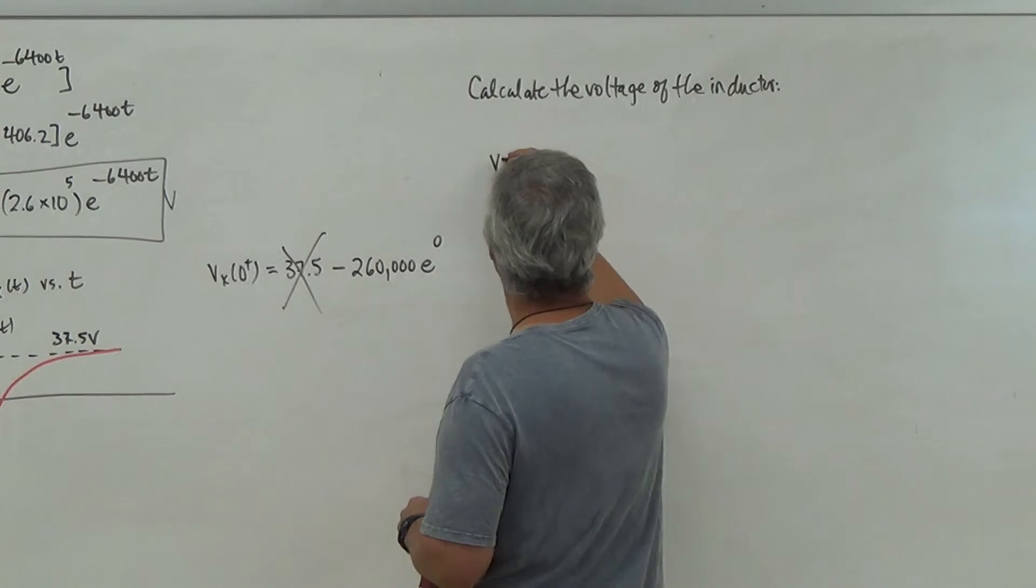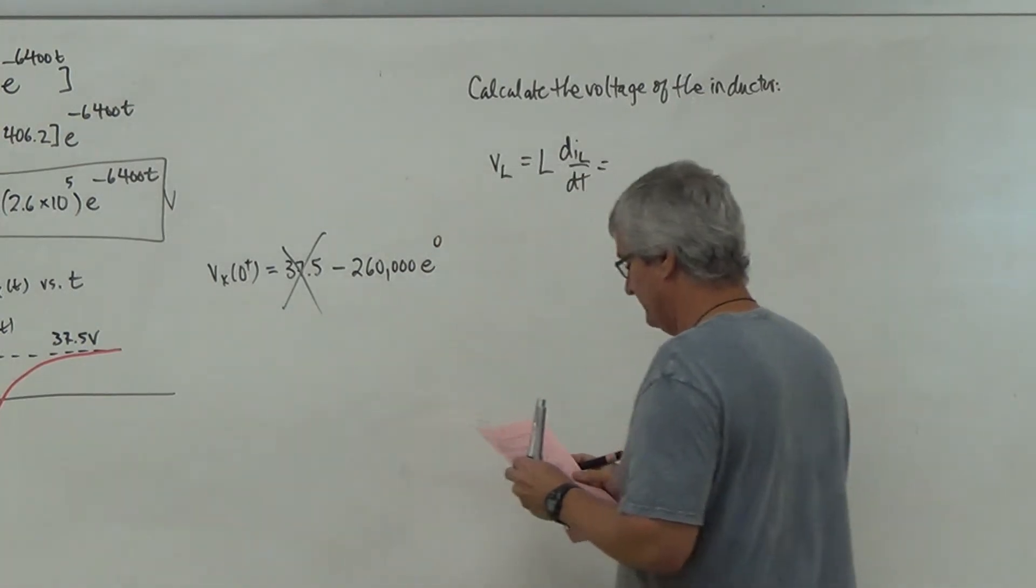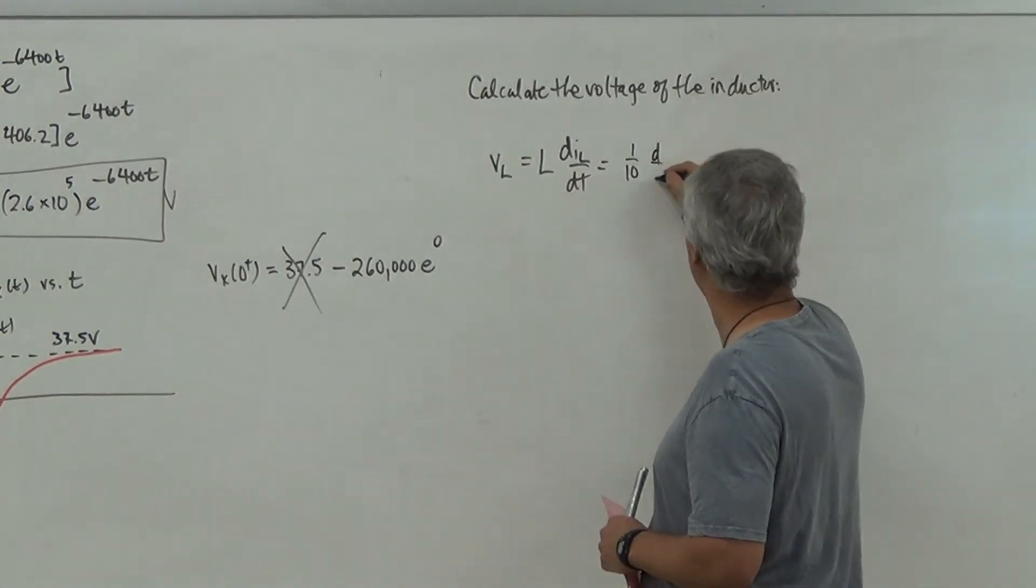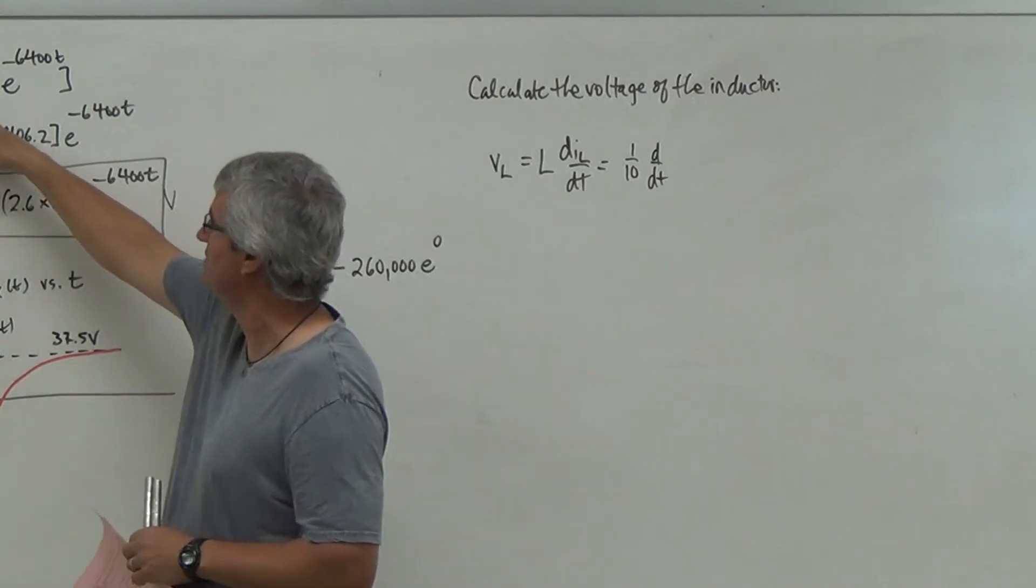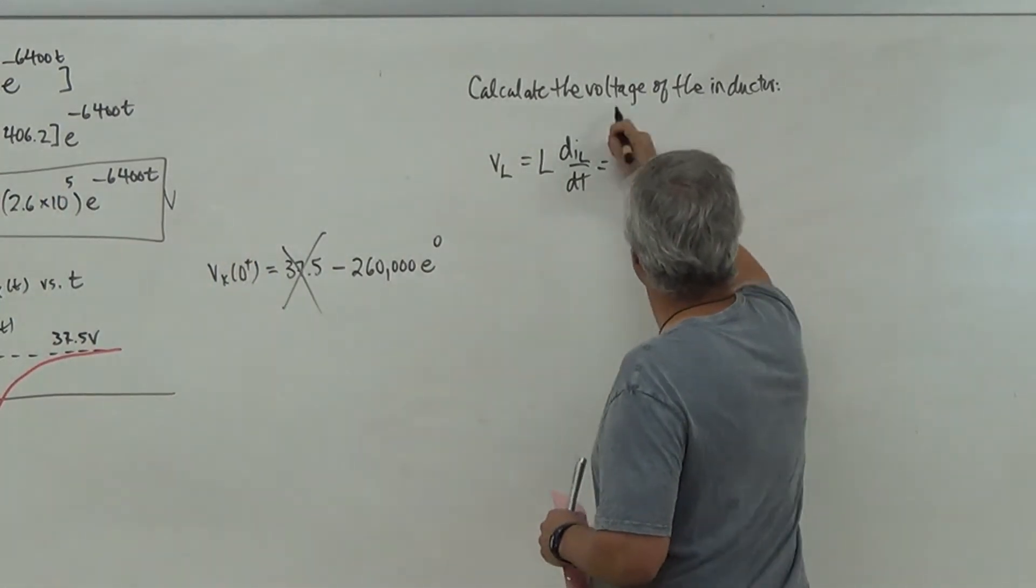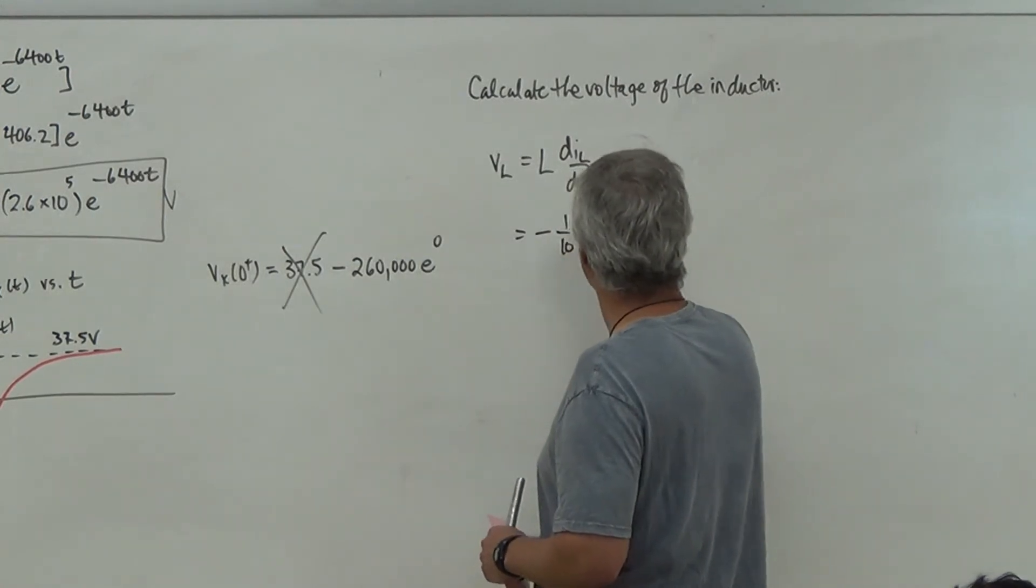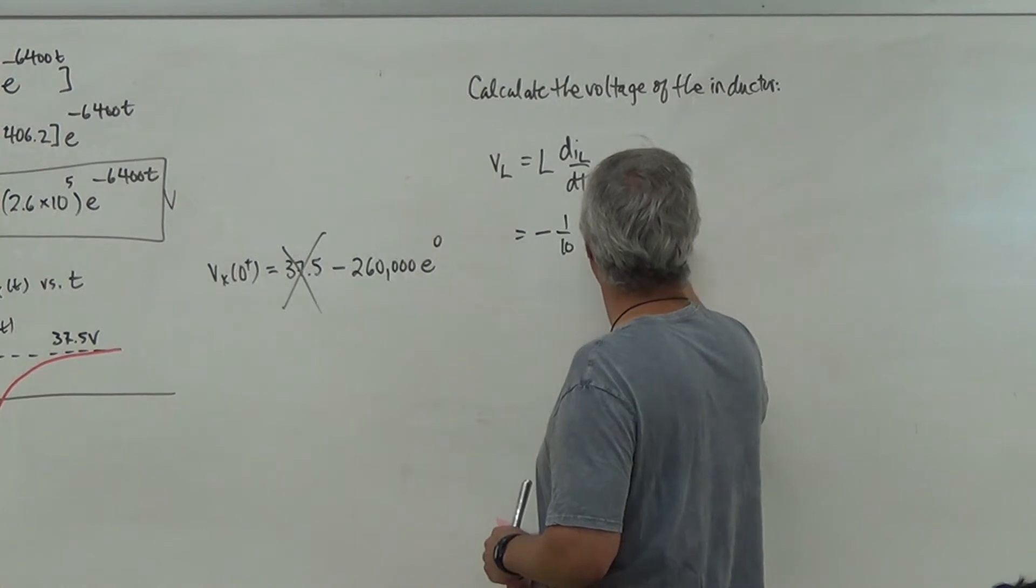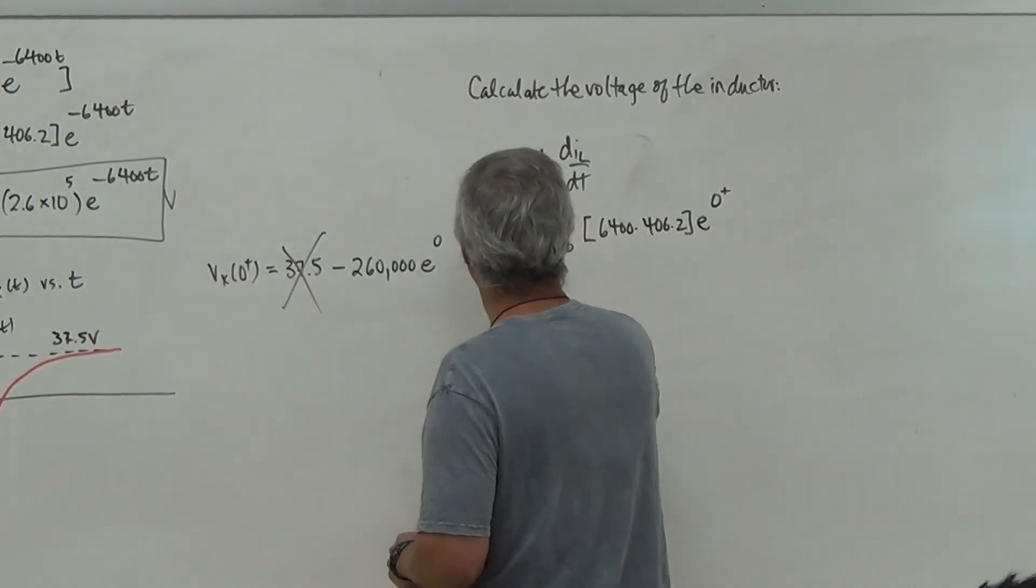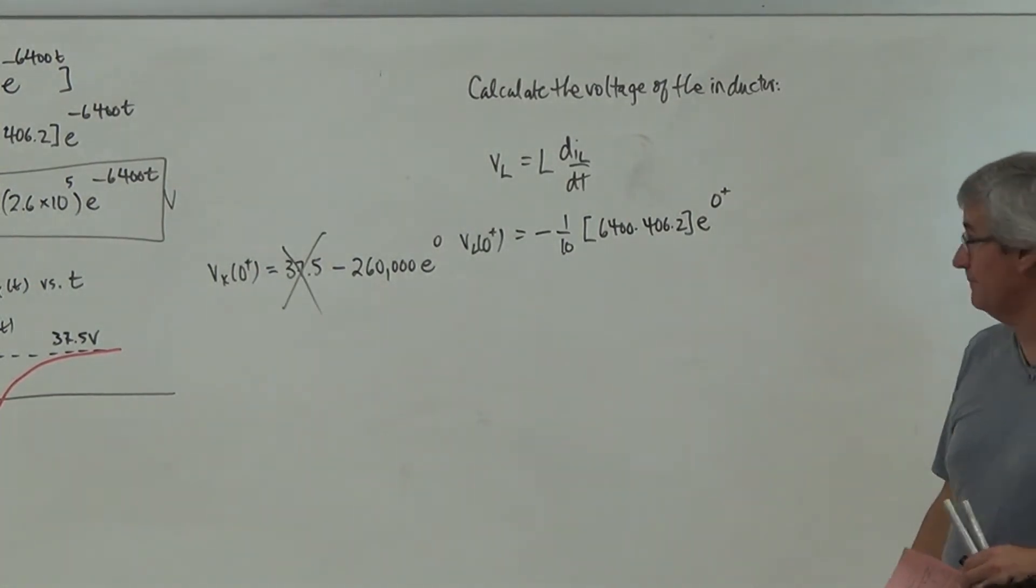So now, let's calculate the voltage of the inductor. So when I look at that, we saw that VL was equal to L dIL/dt. And if you calculate this equation, what am I getting? So L is going to be one tenth. And then I take the derivative of the current. And remember, the derivative of the current is the derivative of that guy right there. Actually, we've got it right here. I don't have to recreate it. We've got it right here. That's it. So that has to be minus one tenth, then I'm going to get 6400 times 406.2 times E to the zero plus. So VL at zero plus, that's when the switch is thrown. That's when it's going to change the voltage across that inductor. You guys with me? This is the time you're supposed to nod your head.